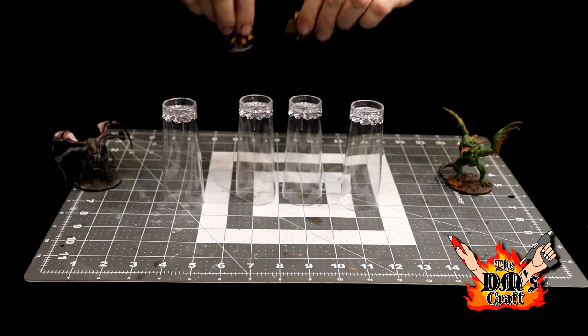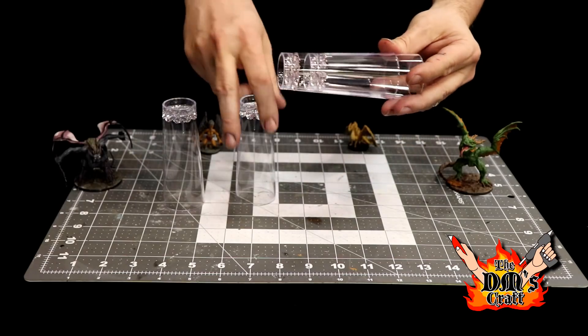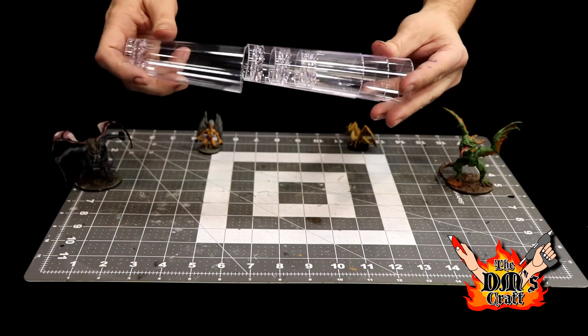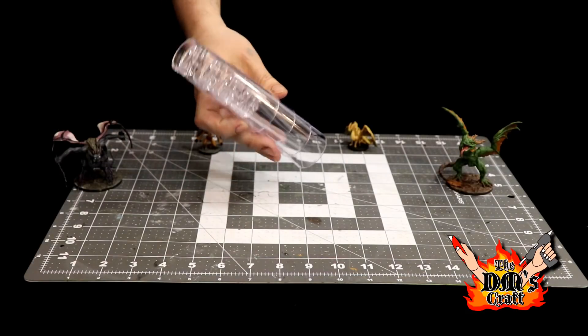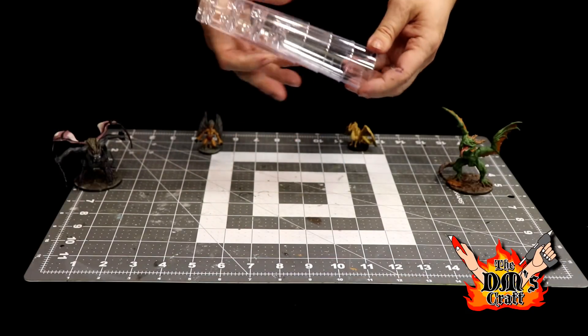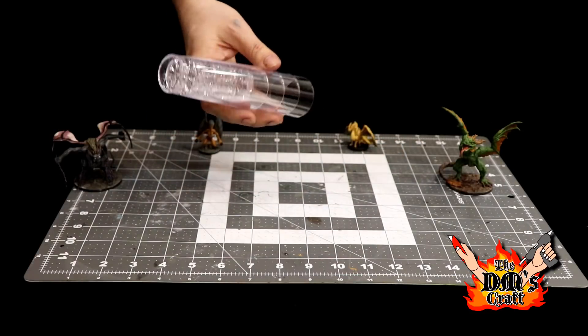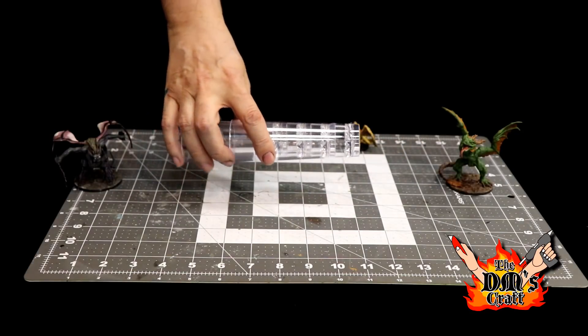Here's another neat feature. When it's time to store these things, let's take our guys off and look, they fit in each other. So cool! Easy storage - you just throw those in your little bin or whatever and you're good to go. You don't have these huge flight stands taking up all this room.